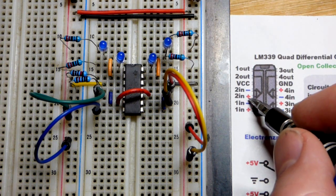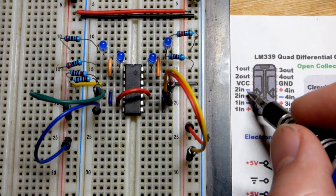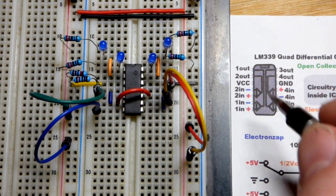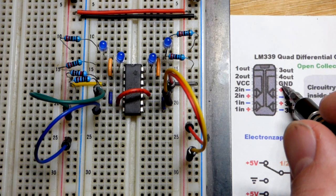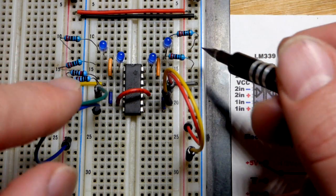But now if the plus, the non-inverting input, is lower than the inverting input, the minus, then the output is low. And it actually connects to ground internally through a transistor when it is low. So that's what we got here.